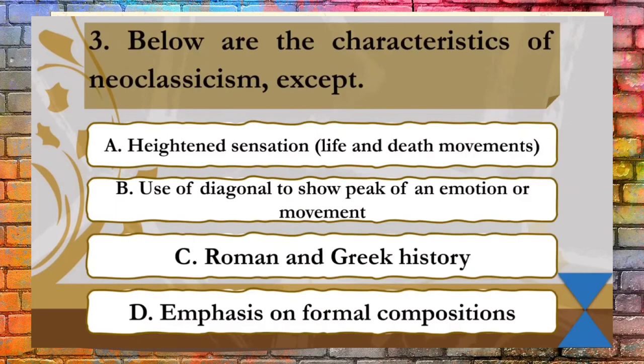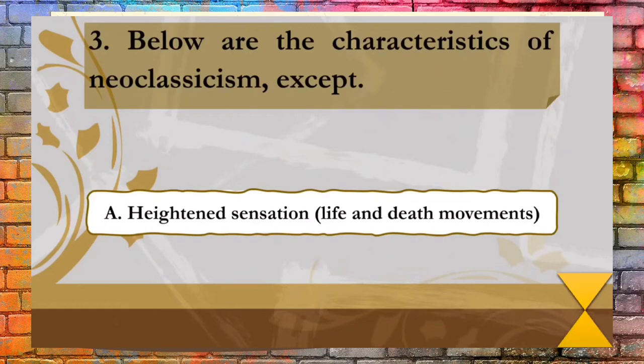Question 3: Below are the characteristics of Neoclassicism except... A. Heightened sensation, life and death movements; B. Use of diagonal to show peak of an emotion or movement; C. Roman and Greek history; D. Emphasis on formal compositions. The correct answer is A, heightened sensation, life and death movement.